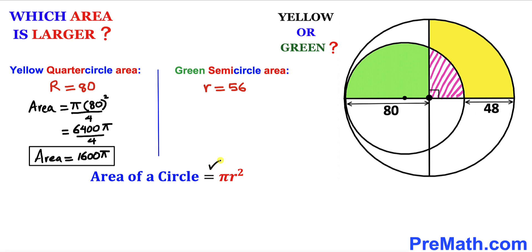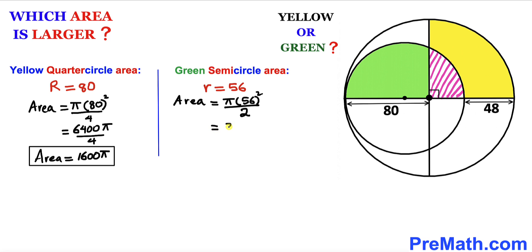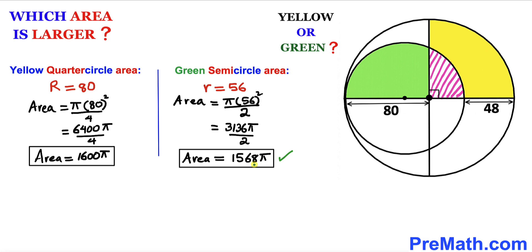Now let's focus on the green semi-circle area, whose radius is 56. The area equals π times 56 squared, divided by 2 since we are dealing with a semi-circle. Simplifying: that gives us 3136π divided by 2, which equals 1568π. So the area of the green semi-circle is 1568π.